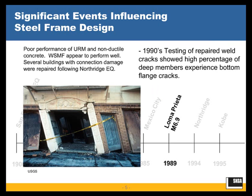The Loma Prieta earthquake gave us a little bit more information in the sense that there were now more inventory of steel moment frame buildings that had been built. However, the steel moment frame performance was overshadowed by a lot of the observed URM failure and non-ductile concrete poor performance. So even though there were some moment frames that they were able to observe, it was overshadowed by a lot of the other failure modes that were observed.